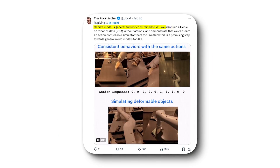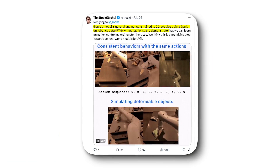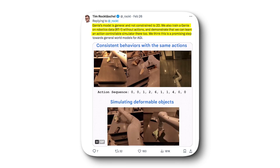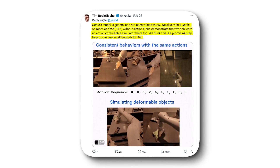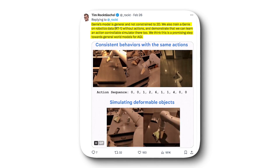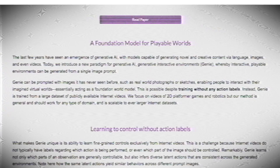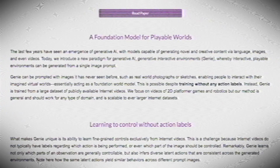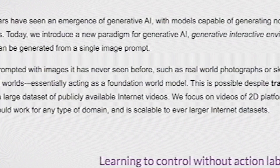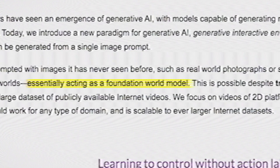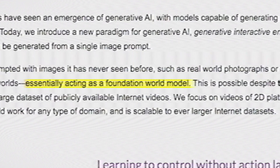If its world model is perfected, AGI might be closer than we think. Google DeepMind even stated this, saying they also trained Genie on robotics data without actions and demonstrated that they can learn an action-controllable simulator there too. They said they think it's a promising step towards general world models for AGI.